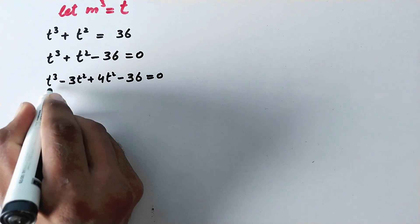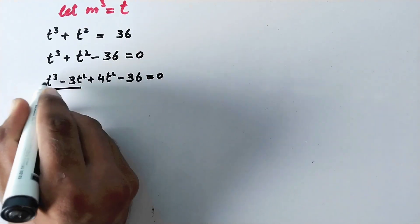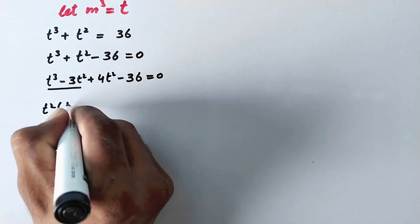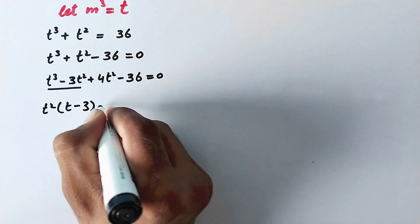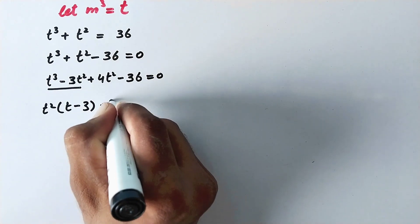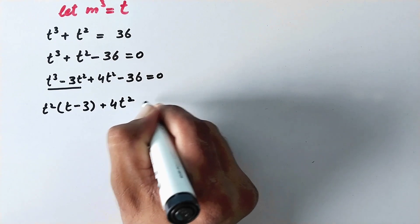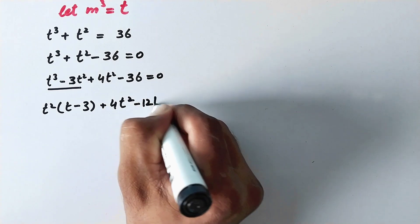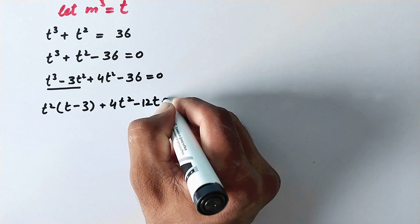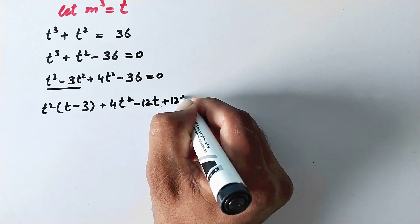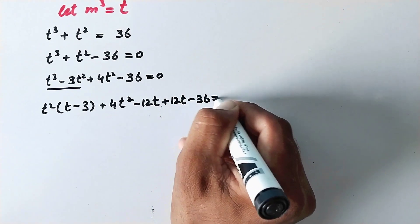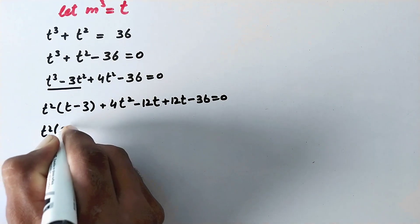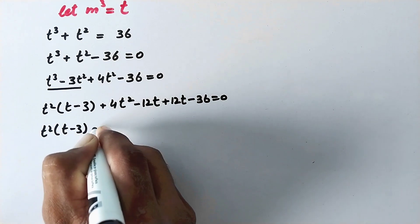We will take t squared as common from the first two terms, giving us t squared times (t minus 3), plus 4t squared. Then we add and subtract 12t, giving us 4t squared minus 12t plus 12t minus 36 is equal to 0.